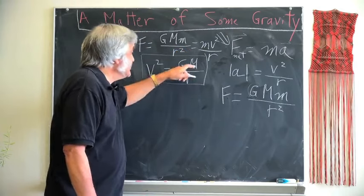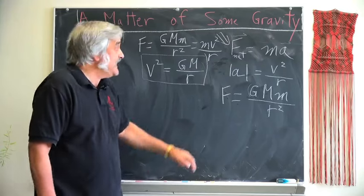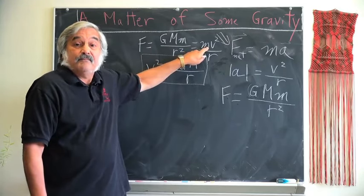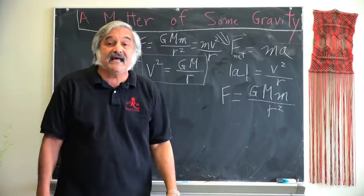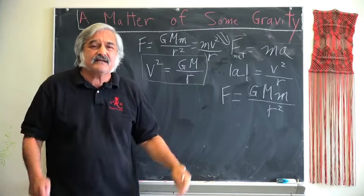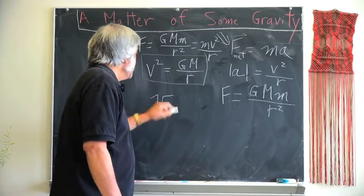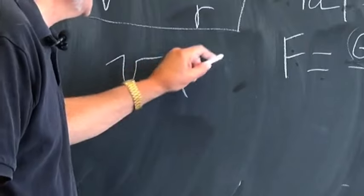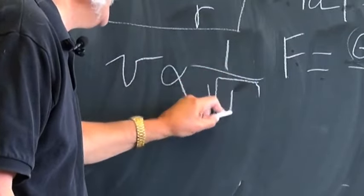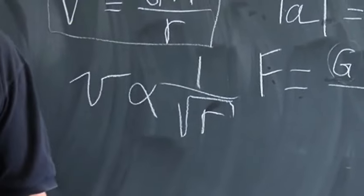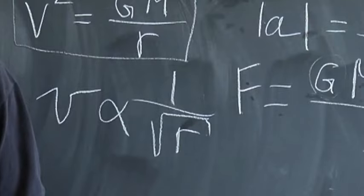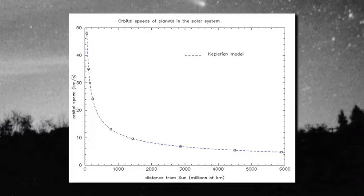Notice that this is independent of our small m. So, if we look at the speeds of planets in their orbits, and these are pretty close to being circular, we should see that the velocity, or speed, will be proportional to 1 over the square root of r. Let's see how that works out in practice. You can see from this diagram that there is exquisite agreement between what is predicted and what is observed.